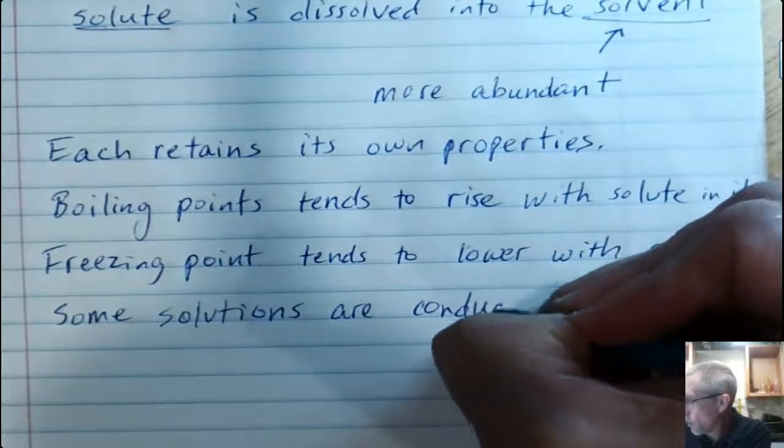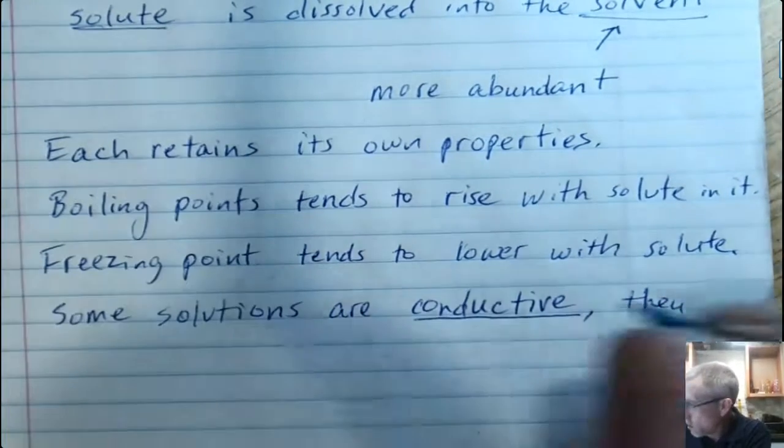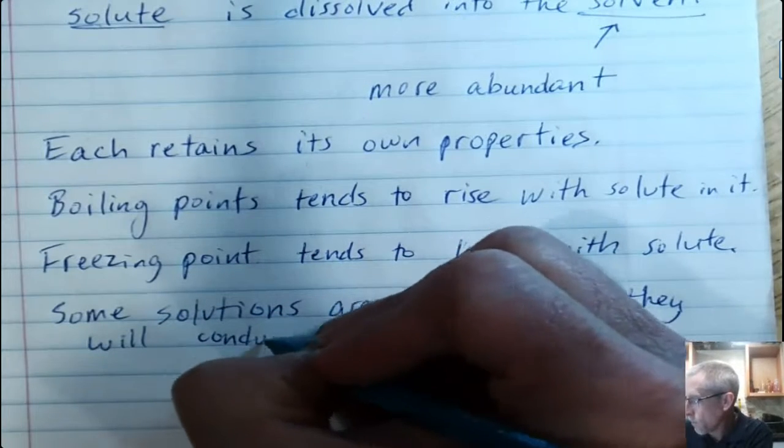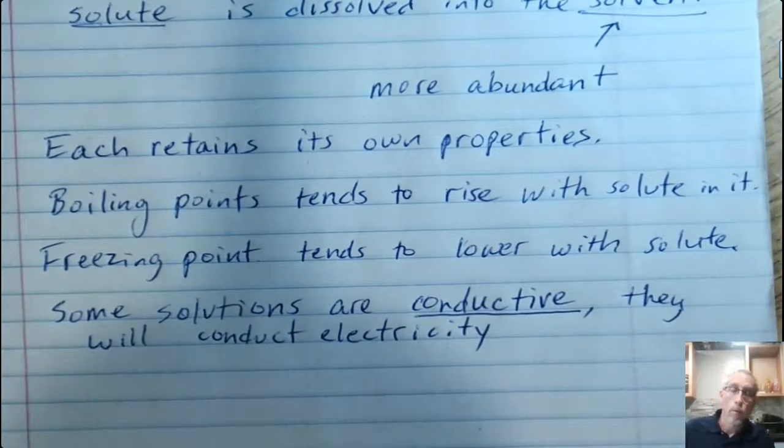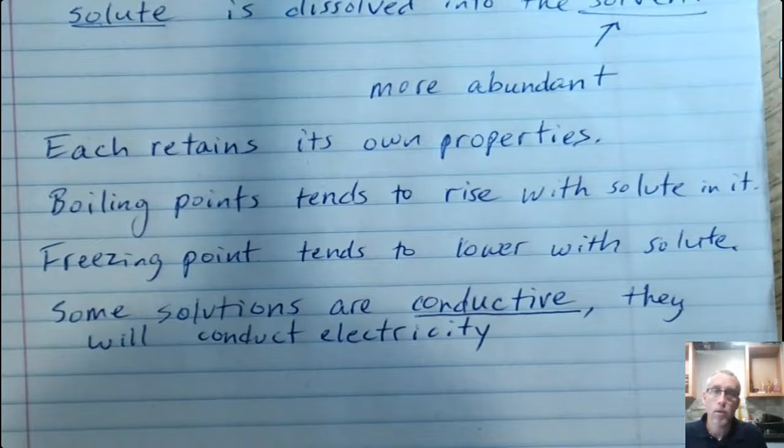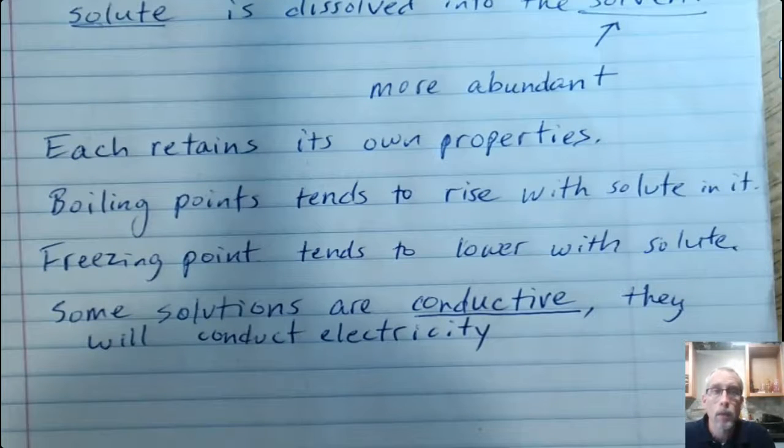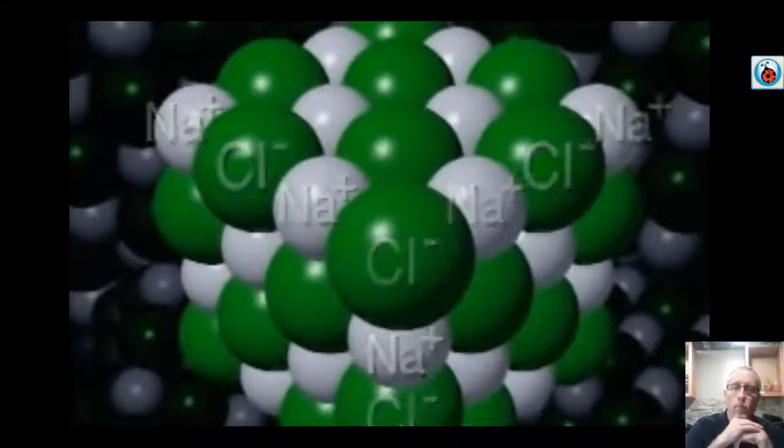Another property is what we call conductivity. Salt water is a good example of that, which means they will conduct electricity. If you try to pass electricity through pure water, it doesn't actually go very well. But if you have salt water in there, you can get electricity to pass through that pretty easily. And the more salt that's dissolved in the water, the easier it is for that electricity to pass through there. That's one of the important properties that some solutions have.